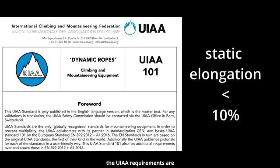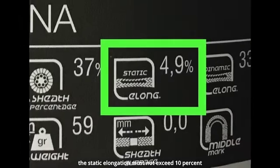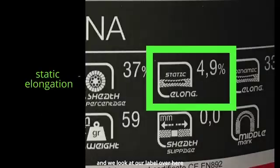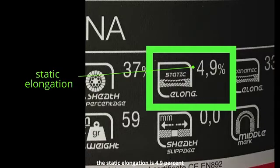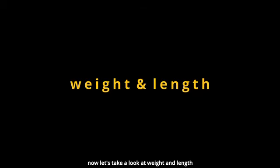UIAA requirements are the static elongation must not exceed 10%. And we look at our label over here. You can see that for the fixed Suriana, the static elongation is 4.9%.